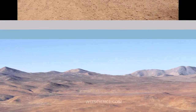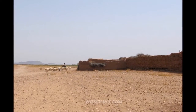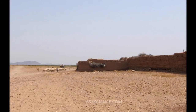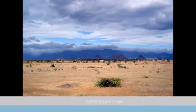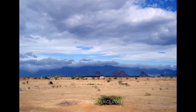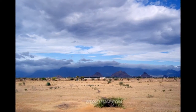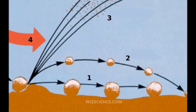Wind-blown sand grains striking any solid object in their path can abrade the surface. Rocks are smoothed down and the wind sorts sand into uniform deposits. The grains end up as level sheets of sand or are piled high in billowing sand dunes.